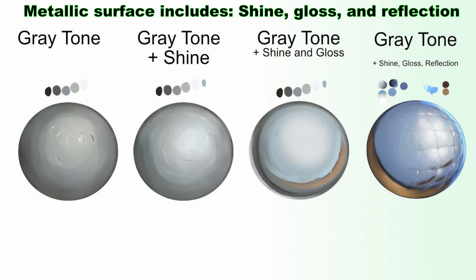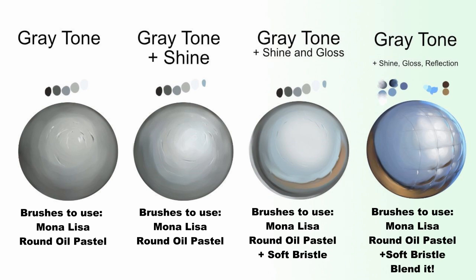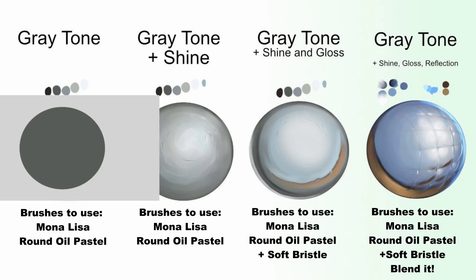Gray tone is mostly solid gray. It contains very little shine and is more of a matted surface. To make this, you start with bold strokes with the Mona Lisa brush and carefully keep going over it with the gray colors.